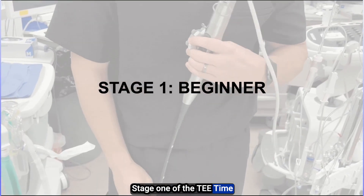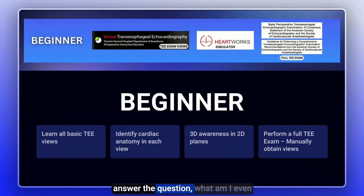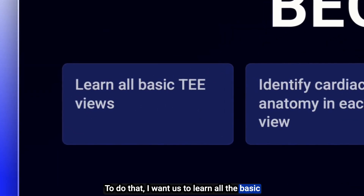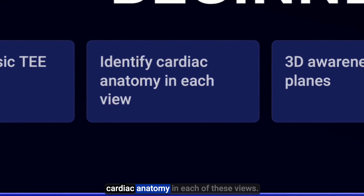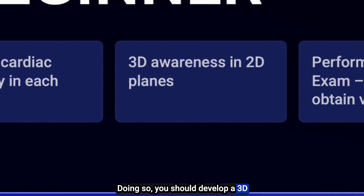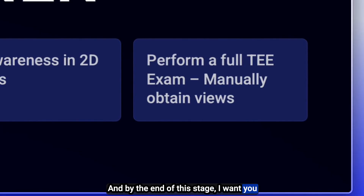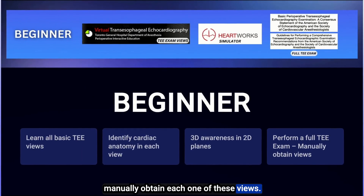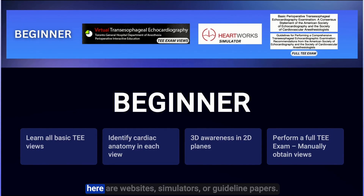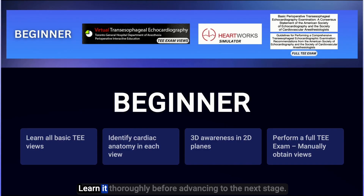Stage one of the T-Time Blueprint is the beginner stage. The overall goal is to be able to answer: what am I even looking at when I'm looking at TEE images? To do that, we want to learn all the basic TEE views and identify the cardiac anatomy in each of these views. You should develop a three-dimensional awareness of these two-dimensional planes. By the end of this stage, you should be able to perform a full TEE exam to manually obtain each one of these views — slow and controlled, not hurried like in an operating room setting.